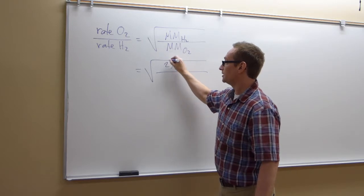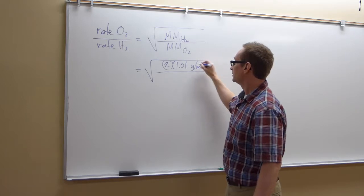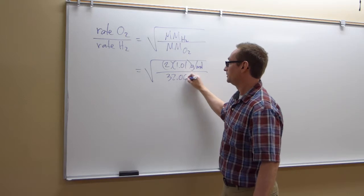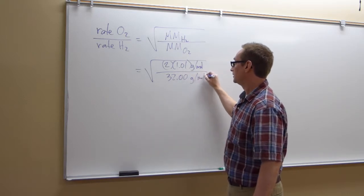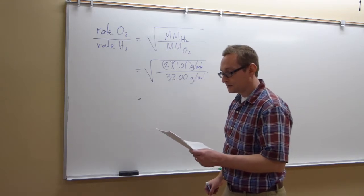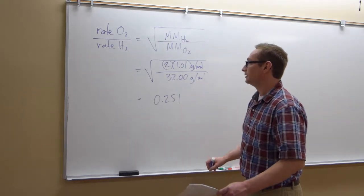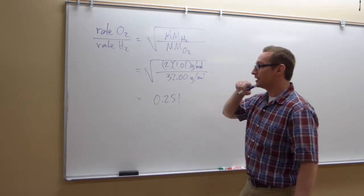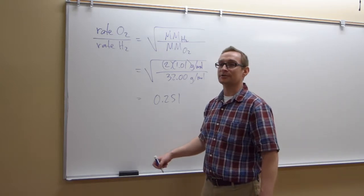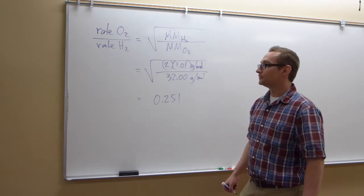So we have, what's the molar mass of H2? It's going to be 2 times 1.01 grams per mole, right? Oxygen will be 32. All right, punch it in and you get an answer. Should get 0.251. So what does this tell you about the rate of effusion? Which gas effuses faster into a vacuum, oxygen or hydrogen?